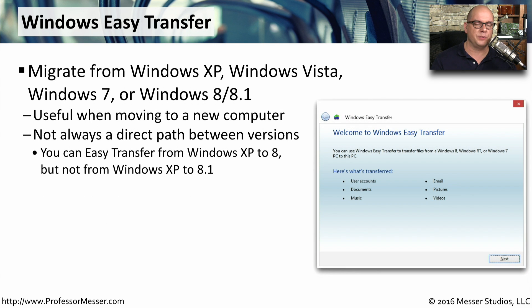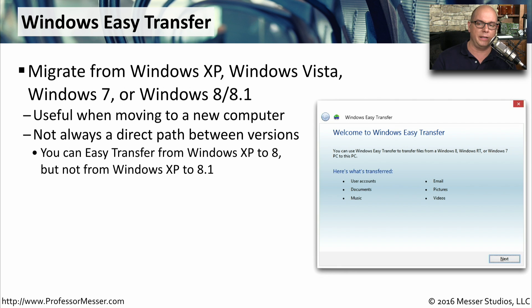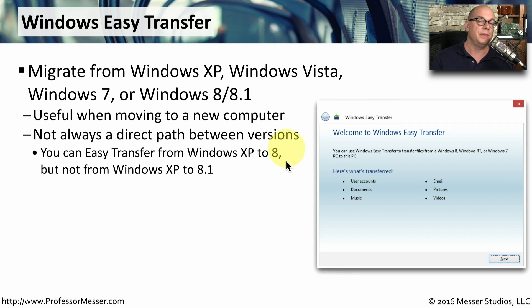One utility to provide migration functionality is called Windows Easy Transfer. This allows you to migrate from Windows XP, Windows Vista, Windows 7, or Windows 8 and 8.1. So if you're moving from one computer to another, you can use Windows Easy Transfer to help with the migration. This does not always provide a direct path between operating systems, however. For instance, you can perform a Windows Easy Transfer from Windows XP to Windows 8, but there's no way to perform the same transfer from Windows XP to Windows 8.1.